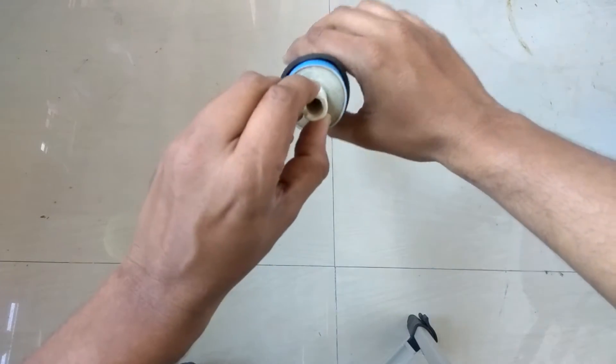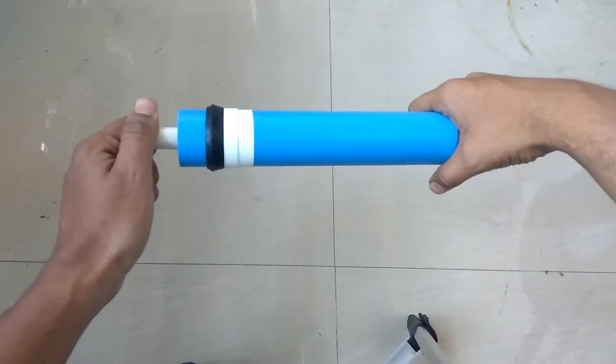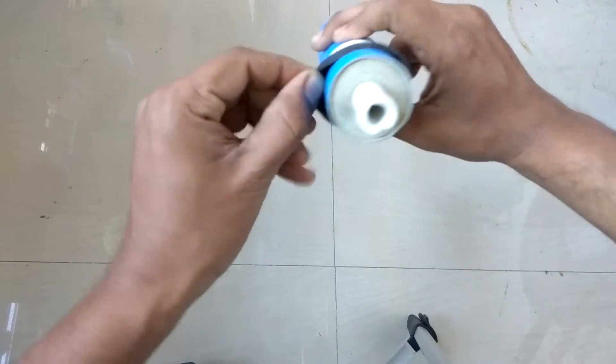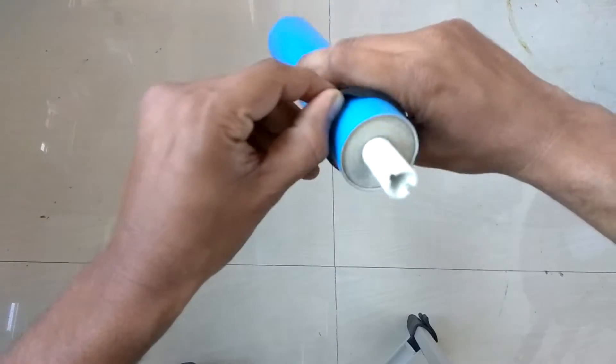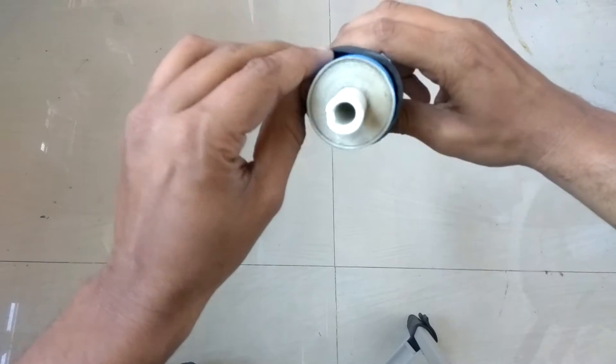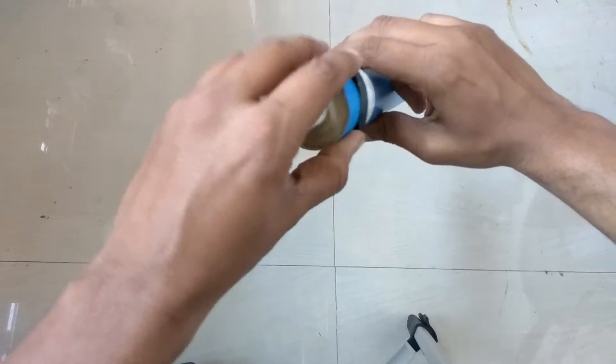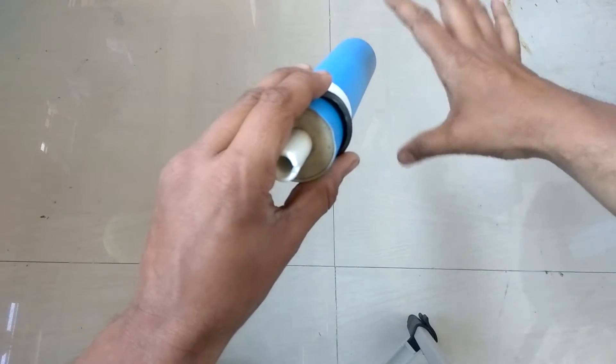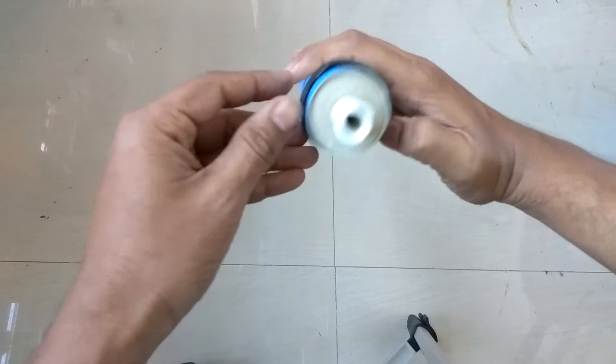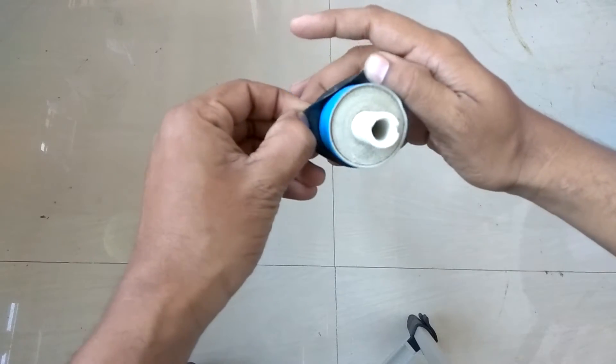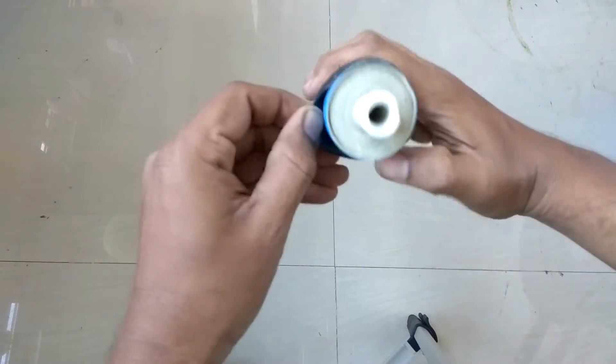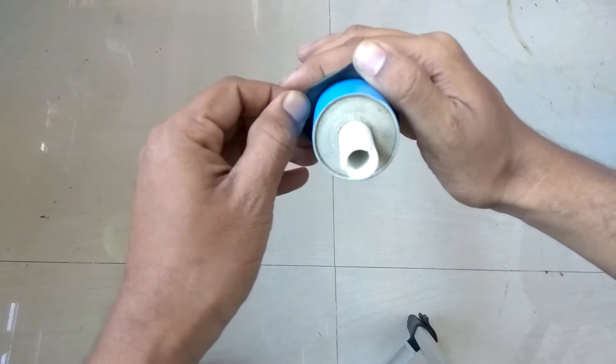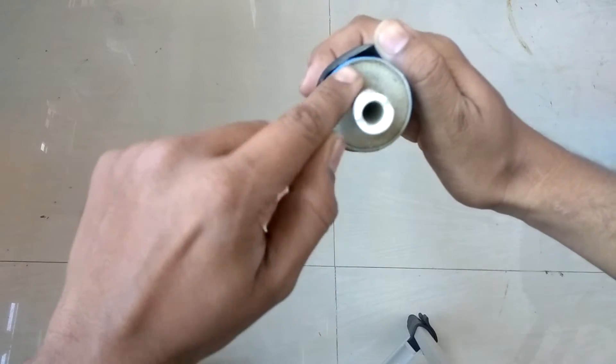When we insert this into the RO membrane housing, this gasket over here expands when the water pressure is generated. After we apply the flow restrictor at the end of the membrane housing, the pressure is generated and this gasket expands so that the water is forced to go through this part.